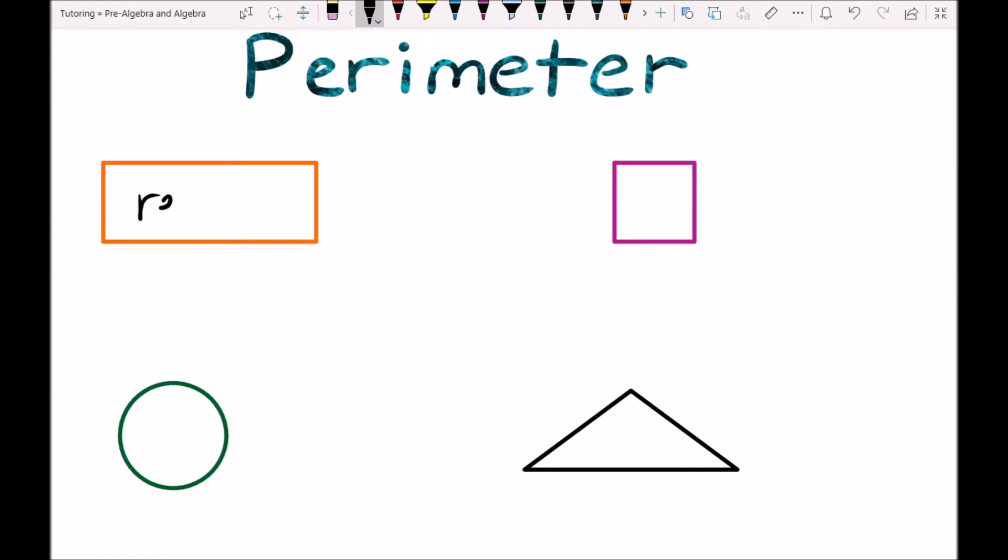We have an orange rectangle, we have a purple square, we have a green circle, and we have a black triangle.